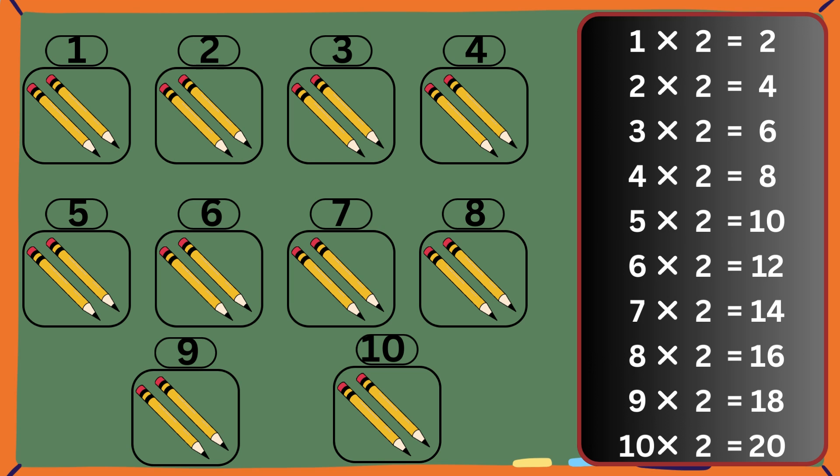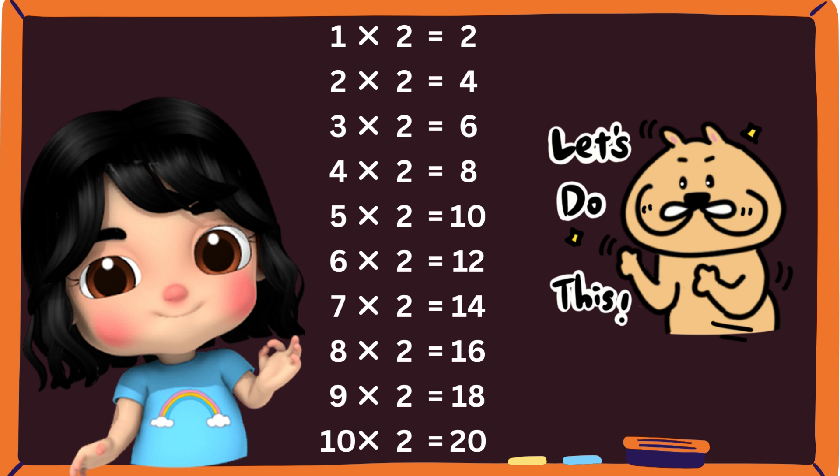Say once again. One twos are two. Two twos are four. Three twos are six. Four twos are eight. Five twos are ten.